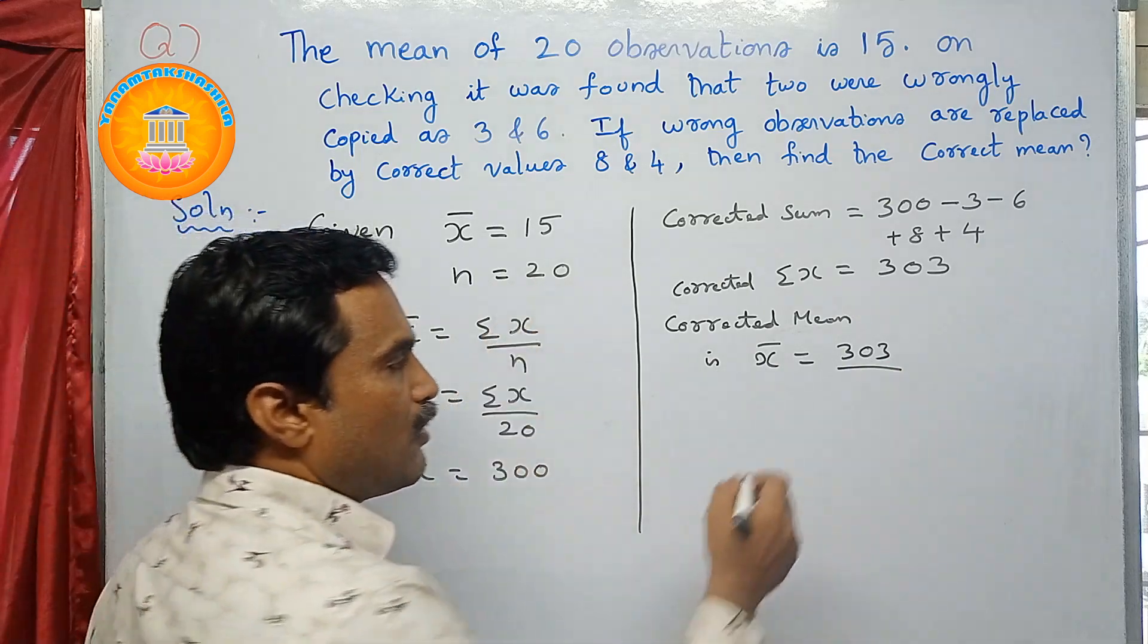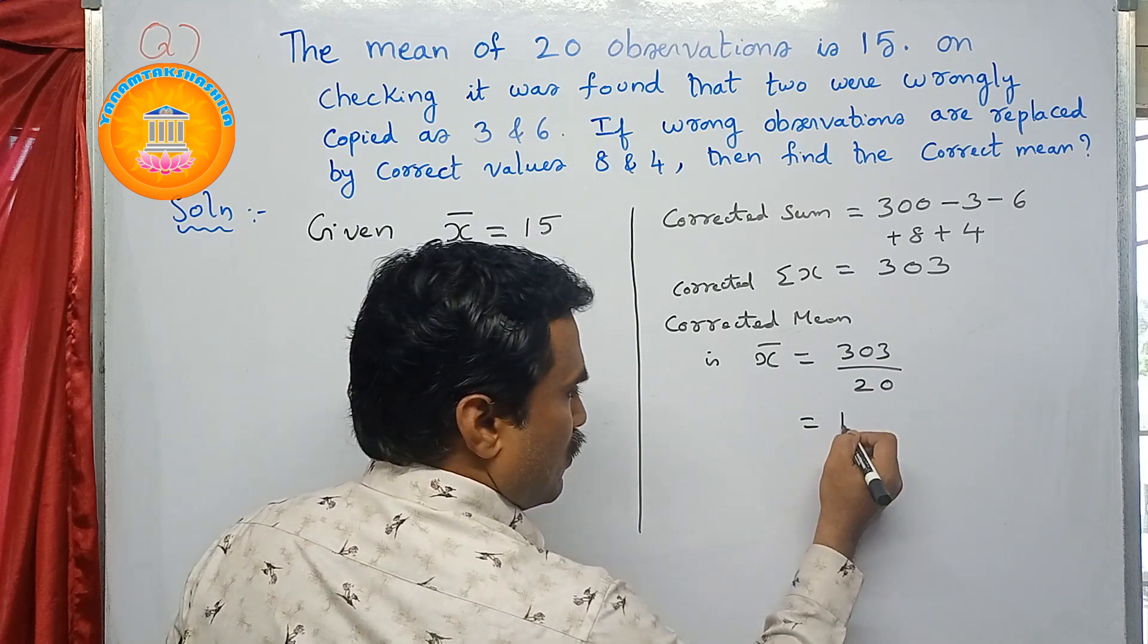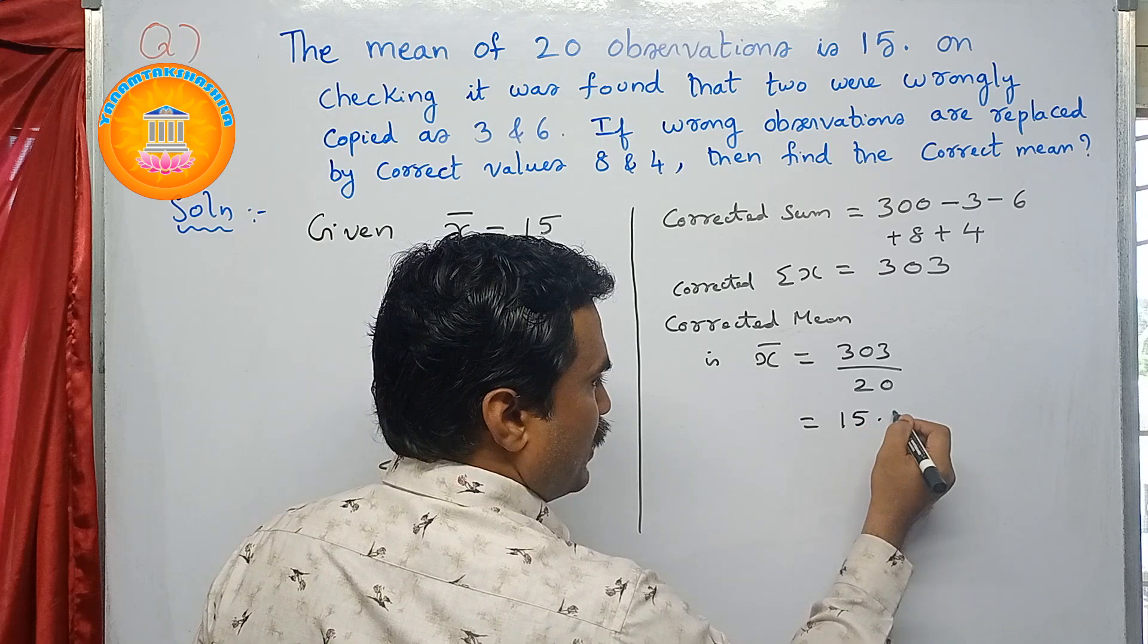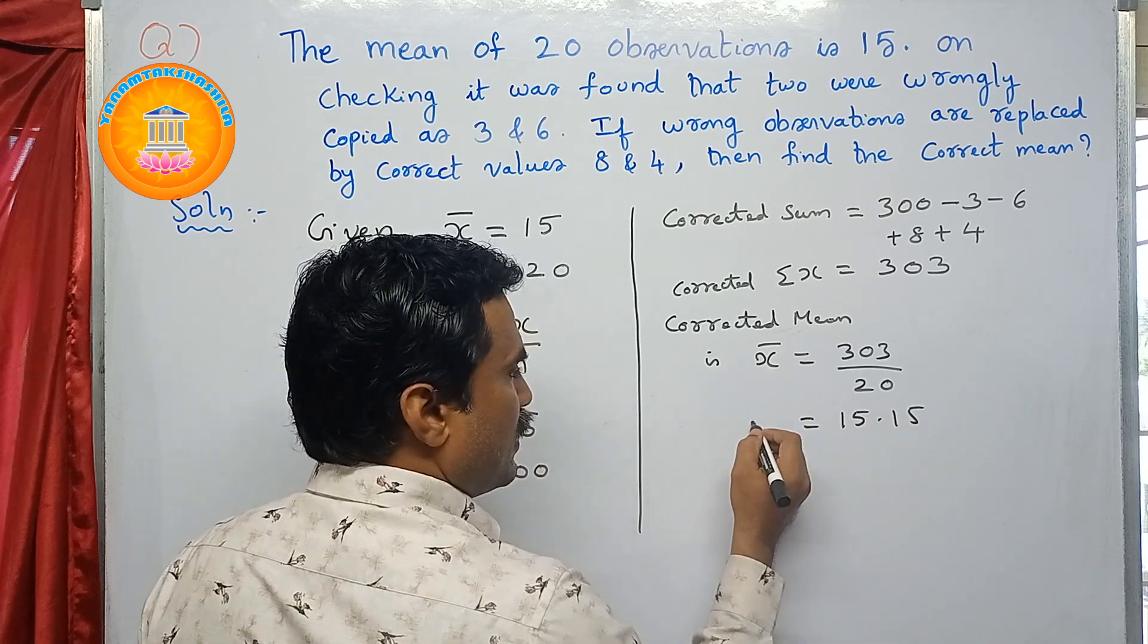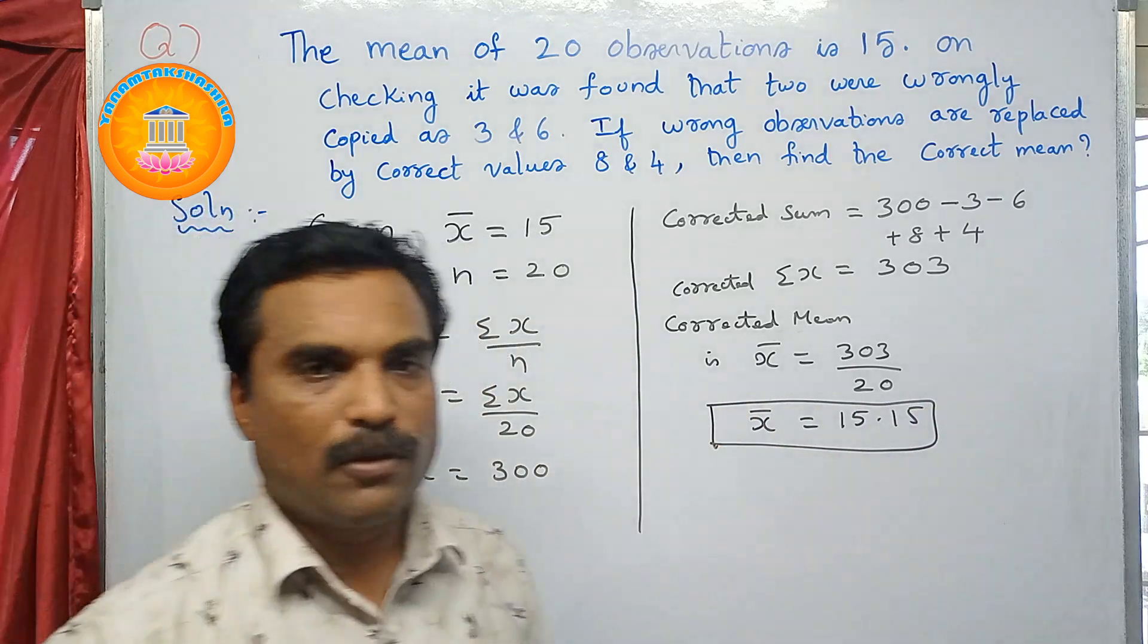So again, what is the n value here? n value is 20. So divide this, you will get 15.15. So this is the corrected mean. So this is how we need to solve this problem.